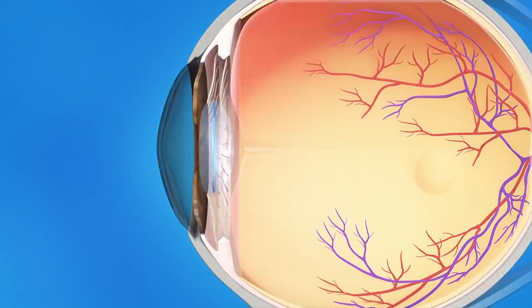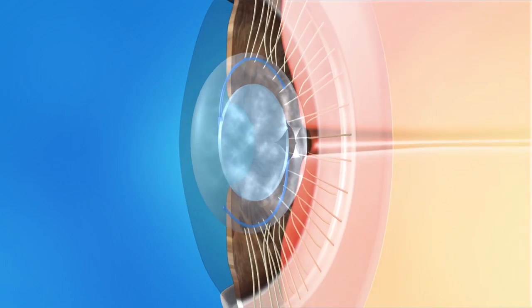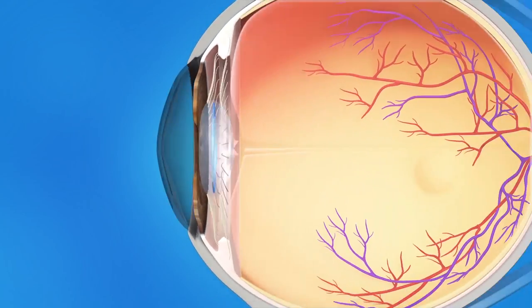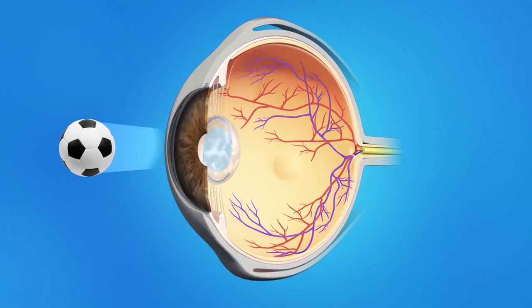With YAG laser capsulotomy, your ophthalmologist will use a laser to create an opening in the back of your eye's cloudy lens capsule. Light can then pass through the lens and focus properly on the retina, allowing you to see clearly again.